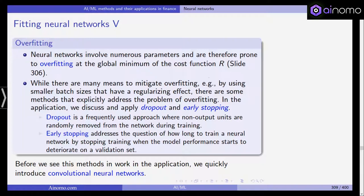The first one is dropout, the other one is early stopping. Now, dropout is frequently used in a way where we are using non-output units and we are randomly removing those non-output units from the network during training. So again, we are reducing the observations that are being used to train the model while early stopping addresses the question of how long to train a neural network.